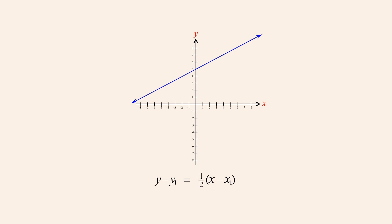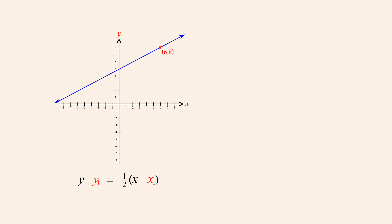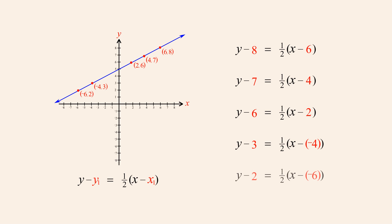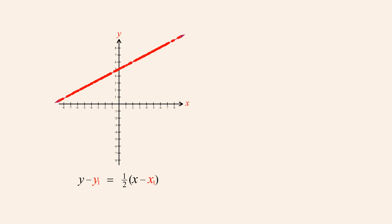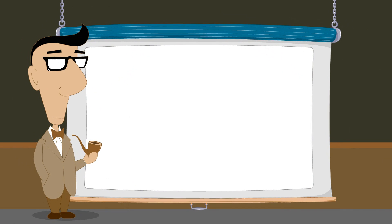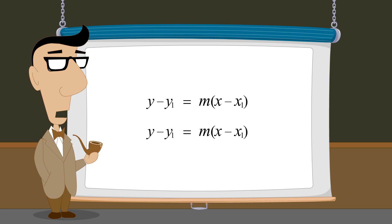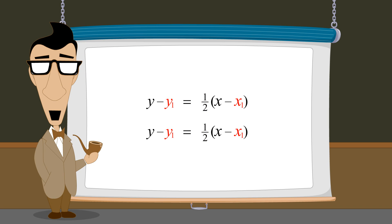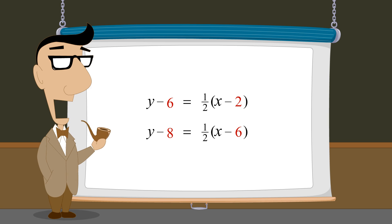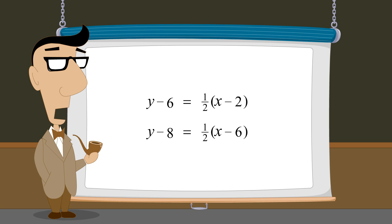Since in point-slope form any one of an infinite number of points on the line may be used to determine the values of x1 and y1, there are an infinite number of different equations which can be written that describe the same line. So when two equations written in point-slope form have the same value for m but different values for x1 and y1, how can we determine if they describe parallel lines or the same line?